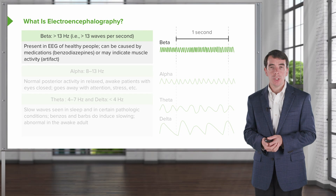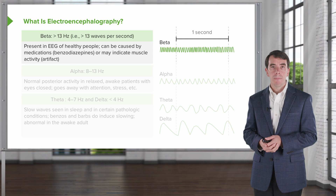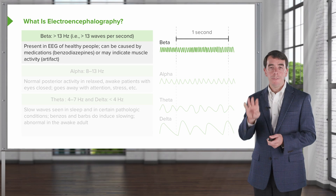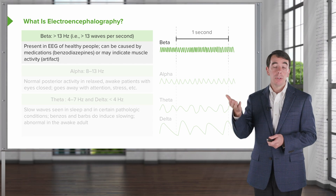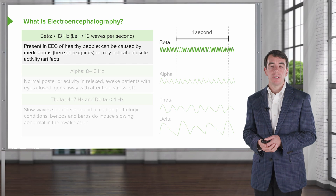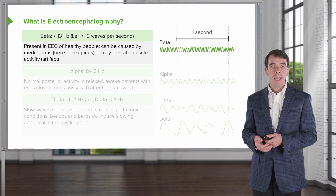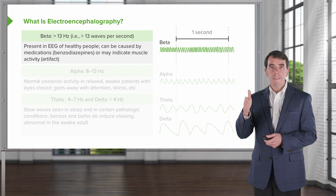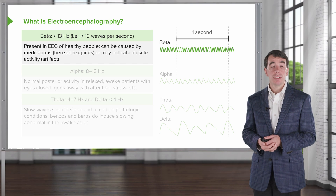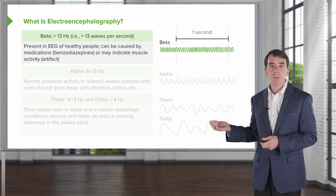When we're looking at the EEG, at each of those squiggly lines, we're looking for different frequencies. There are basically four frequencies to consider. The first is beta frequency — a very high frequency, greater than 13 hertz. It's present in the EEG of healthy people and can be caused by medications like benzodiazepines, or indicate muscle activity or muscle artifact. At the end of that seizure, we saw very dark, high-amplitude, high-frequency activity — that was muscle activity from the patient's jerking during the clonic phase — beta activity.